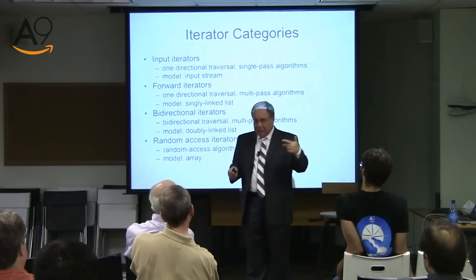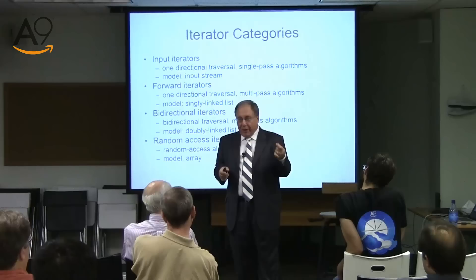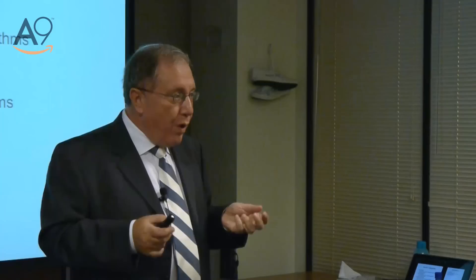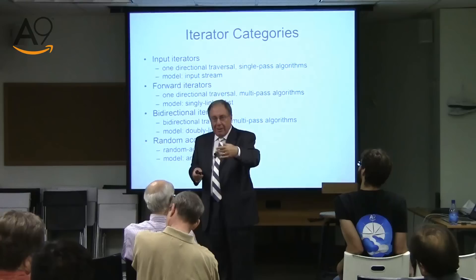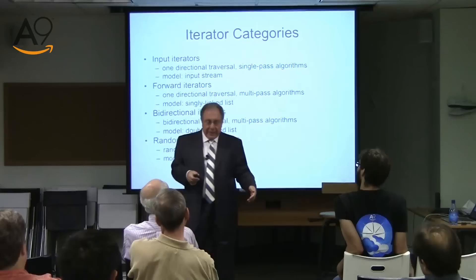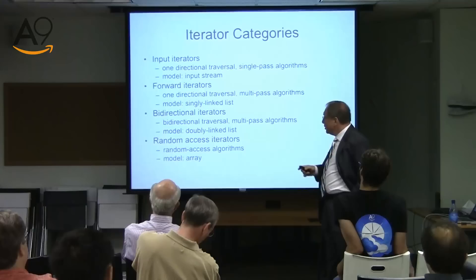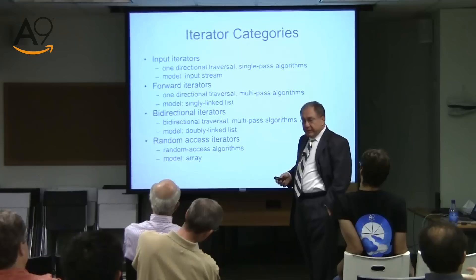There is a difference between forward pass and single pass, because when you pass forward you could go many times. If it's single pass, there are data structures like that — for example, data coming through a wire is a perfect model of an input iterator. You could read it, but you could read it only once; it is gone. All kinds of streams represent this notion of input iterator. You could go forward, but after you make this step, whatever you were is gone — it cannot be retrieved.